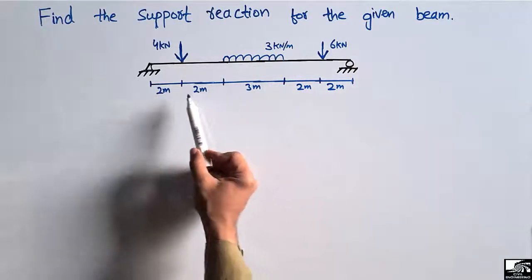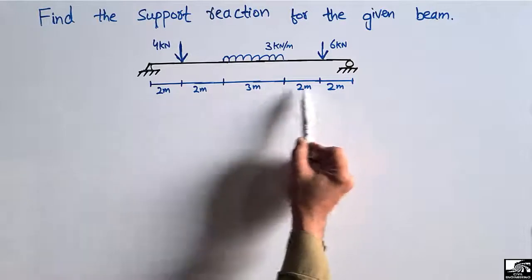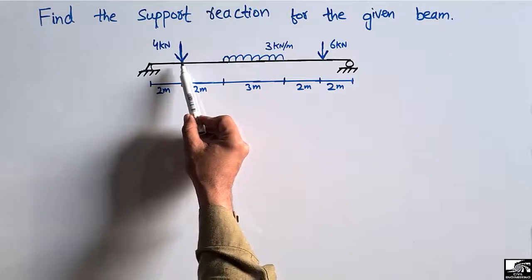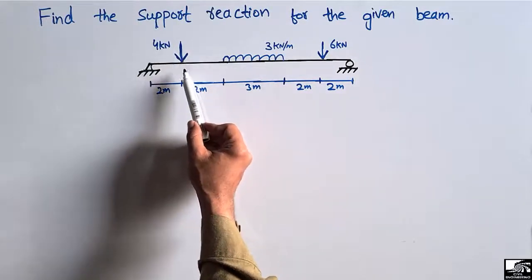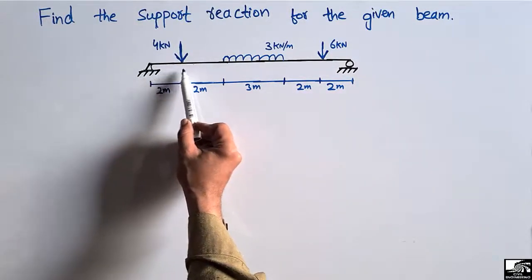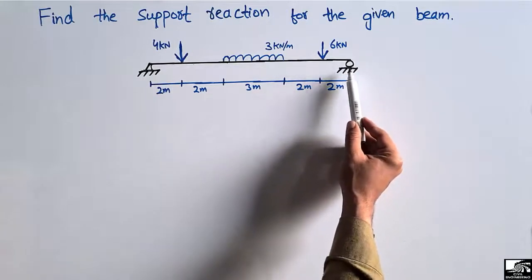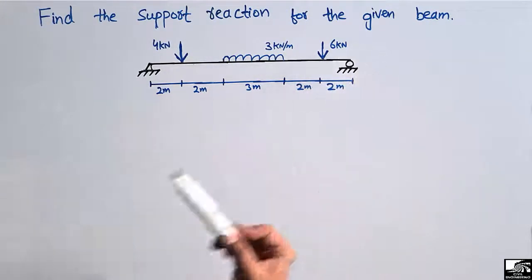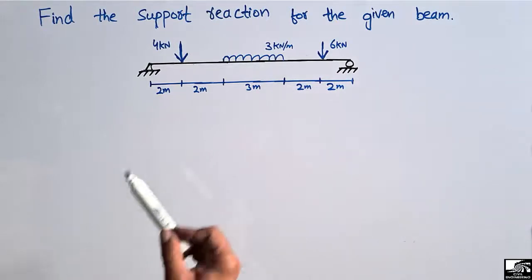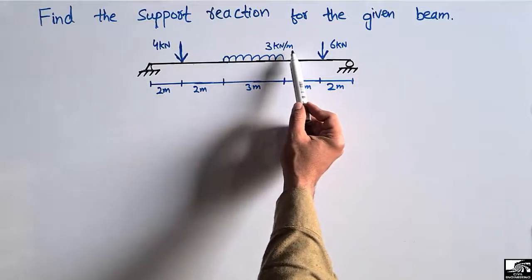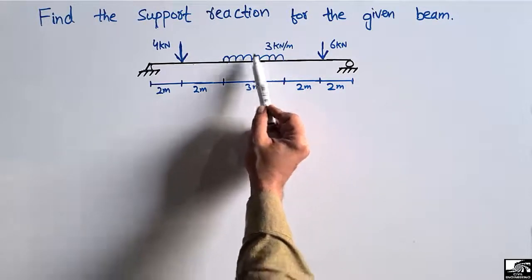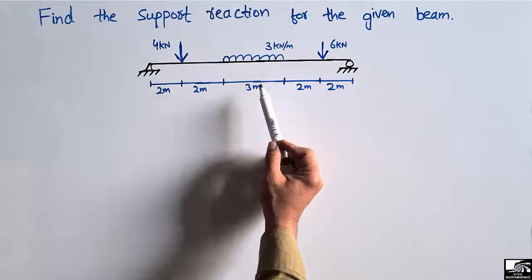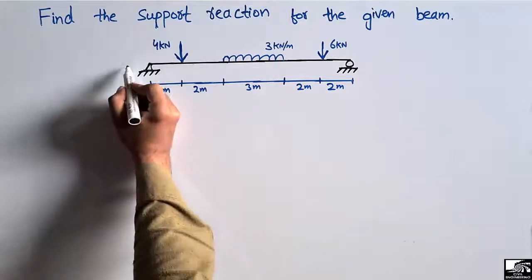This beam has a total length of 11 meters. There are two concentrated loads acting on it: one with a magnitude of 4 kN acting at a distance of 2 meters from the hinge support, and another of 6 kN acting at 2 meters from the roller support. There is also a uniformly distributed load of 3 kN/m acting over a distance of 3 meters at the middle of the beam.